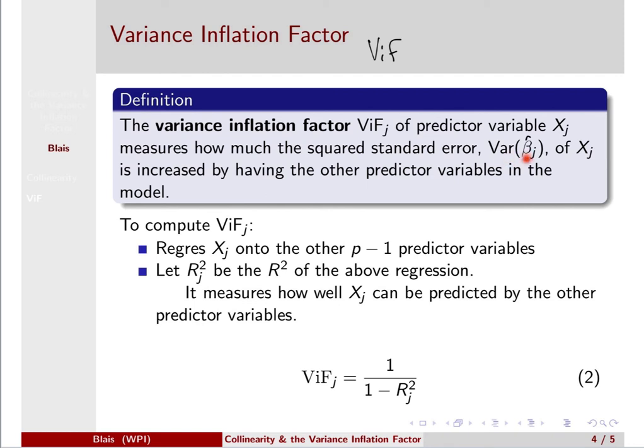So how shaky is our estimate of that coefficient for predictor variable Xj if we have all the other predictor variables in the model with it. And the way we compute this variance inflation factor for Xj is we regress Xj onto the other predictors. So we have p minus one remaining predictor variables, so do a multilinear regression where Xj is now the response and the others are the predictors.